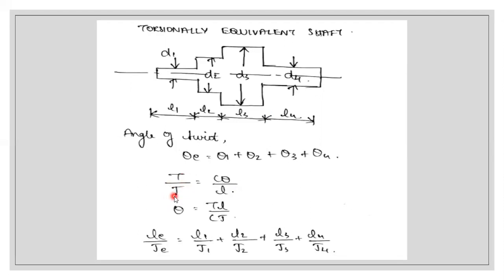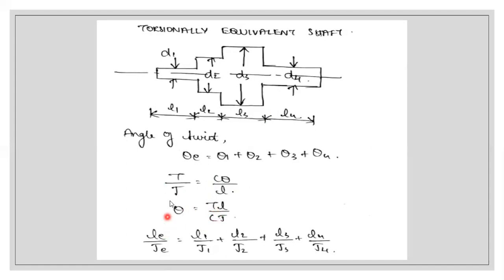C is the modulus of rigidity with units Newton per meter squared. Theta is the angle of twist in radians, and L is the length of the shaft in meters. We keep the angle of twist theta on one side and take everything else to the other side, giving us theta equals TL divided by CJ.